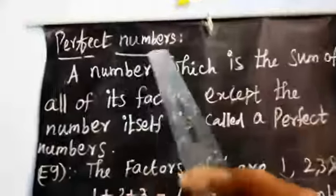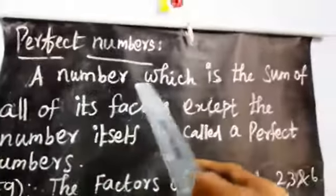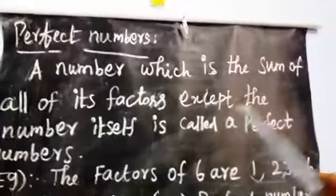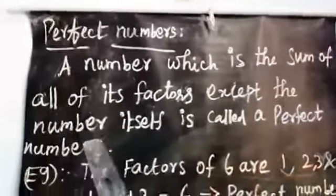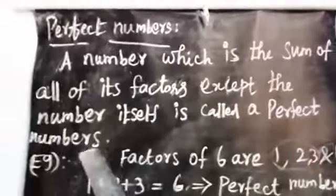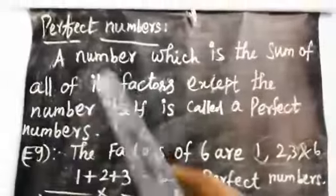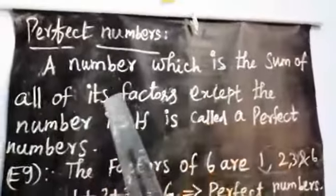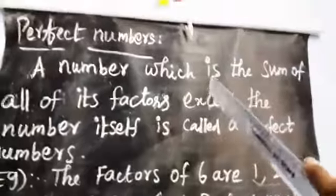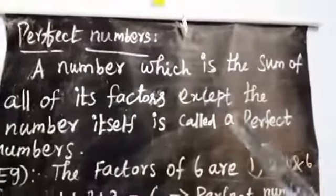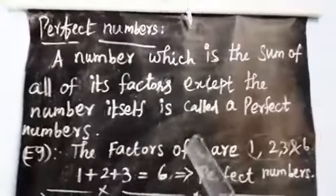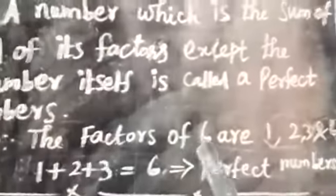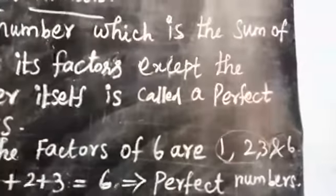Next, perfect numbers. A number which is the sum of all of its factors, excluding the number itself, is called a perfect number. Now take the number 6. The factors of 6 are 1, 2, 3, and 6.